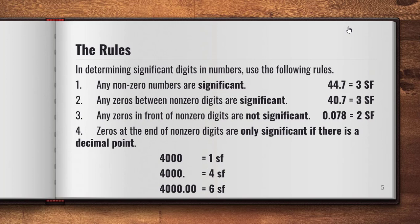When given a number and looking at significant digits, these are the rules we use. First, any non-zero numbers are significant. So in 44.7, the first four, second four, and the seven are all significant. Second, any zeros between non-zero digits are significant. In 40.7, the four is significant, the seven is significant, and because the zero falls between two significant figures, it is also significant — giving us three significant figures.